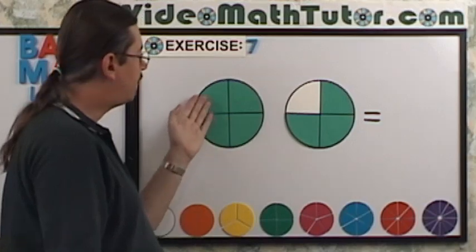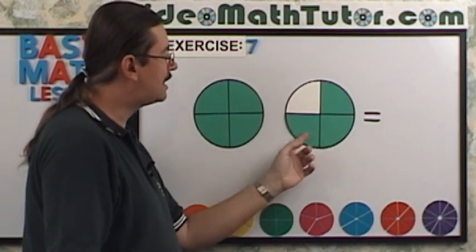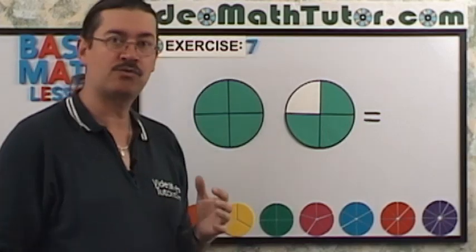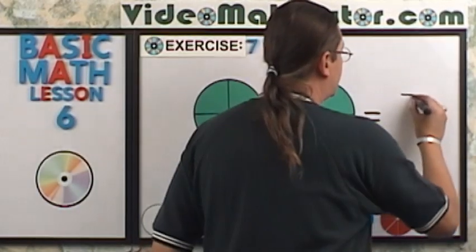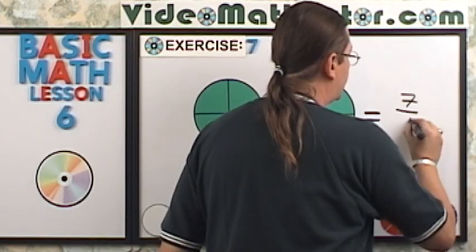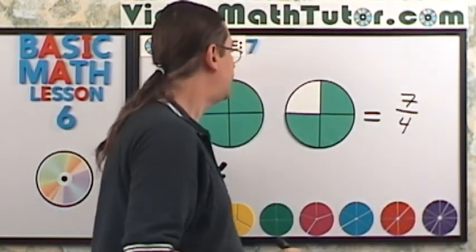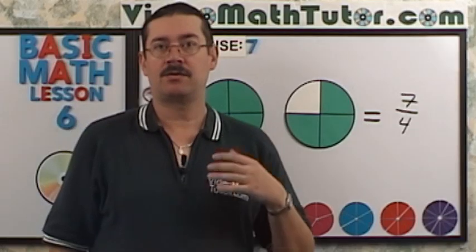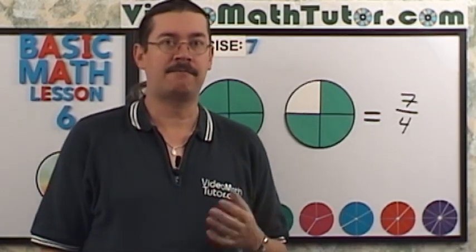We have four, five, six, seven. Seven shaded regions. So we have seven, but they were originally cut into four parts each. So our improper fraction is seven fourths.